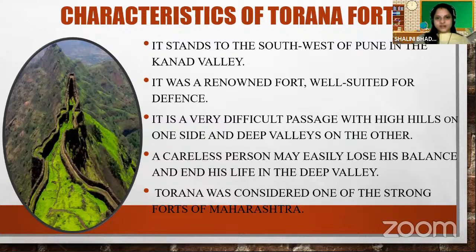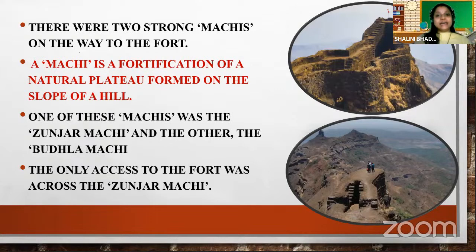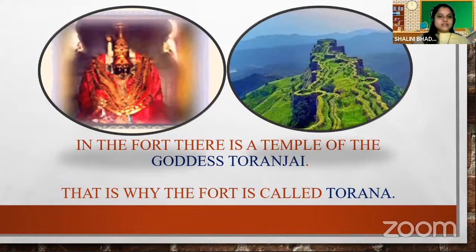Torana was considered one of the strongest forts in Maharashtra, and it was Shivaji's plan to capture it first. In the Torana Fort there were two Machis. A Machi is a fortification of a natural plateau formed on the slope of a hill. The first was the Junzar Machi and the other was the Hudla Machi. The only access to the fort was across the Junzar Machi. In the Torana Fort there was a Temple of Goddess Toranzai, and because of that the fort was named Torana Fort.